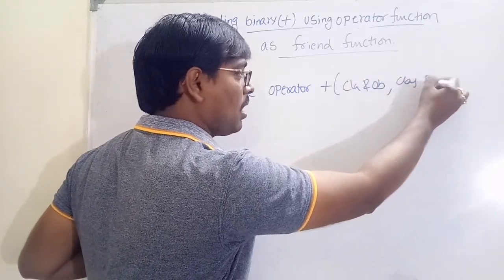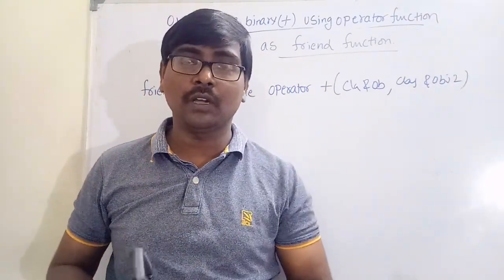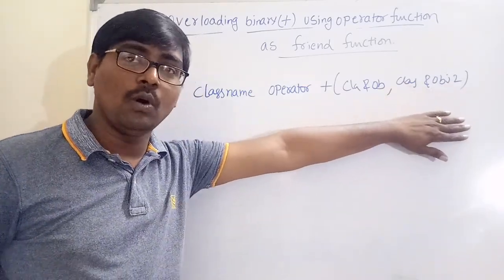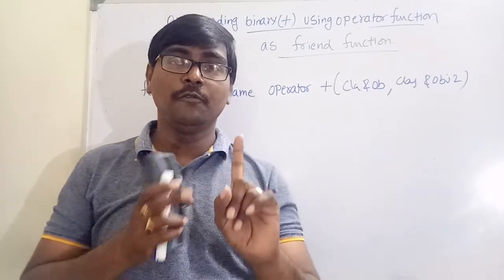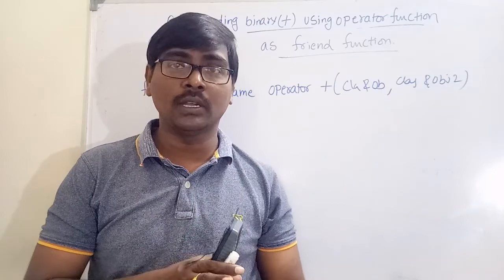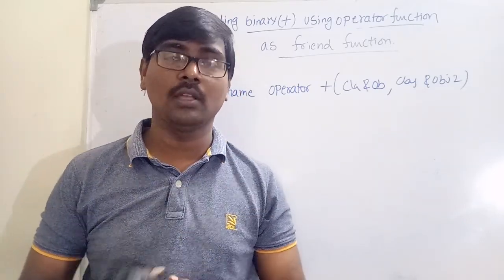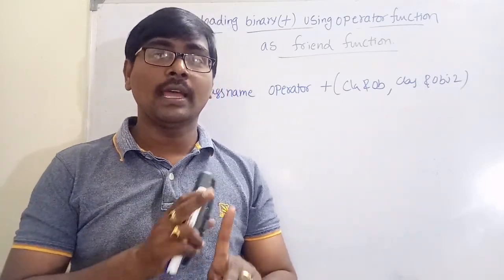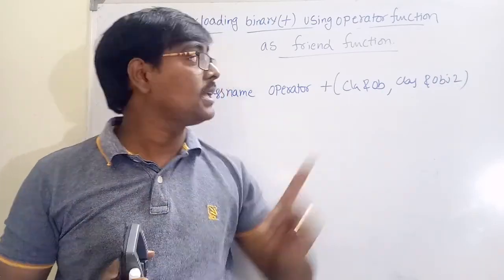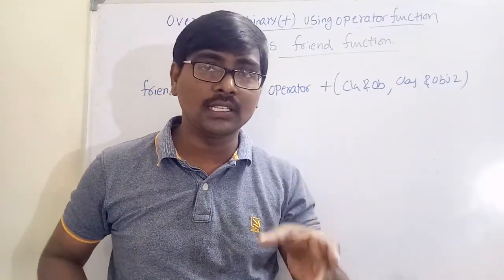The syntax is: class name object one, comma, class name object two. If you are using a friend function with a binary operator, the operator function takes two arguments. If you are using a unary operator as a member function, it takes no arguments. If you are using a unary operator as a friend function, it takes one argument. If you are using a binary operator as a friend function, it takes two arguments.